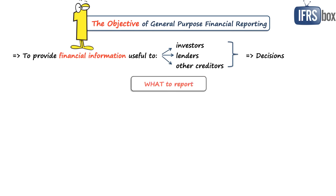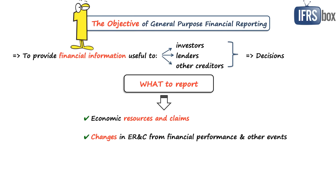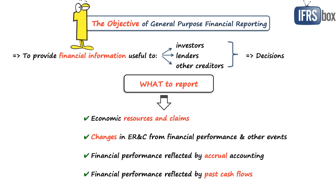What financial information shall be reported in general purpose reports? Note that we are not talking about financial statements yet, as those are subject to Chapter 3. The entity shall present information about its economic resources and claims, which is basically the financial position, then changes in economic resources and claims resulting from the entity's financial performance and from other events. Financial performance shall be reflected by accrual accounting, regardless of related cash flows, though information about past cash flows is very important to assess management's ability to generate future cash flows.